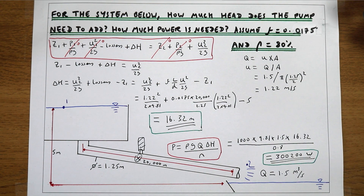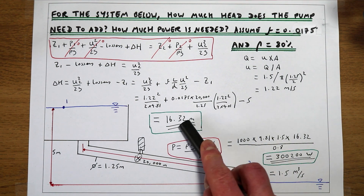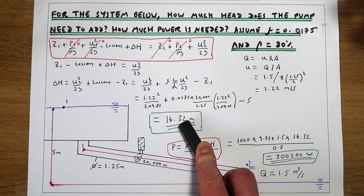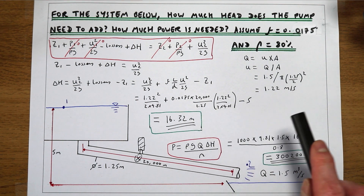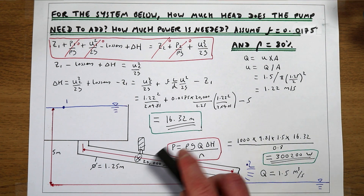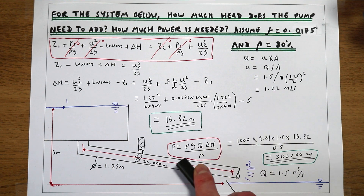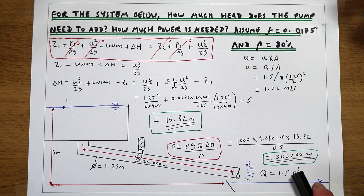So if you were designing a pump system and needed to know what level of pump was required to keep this system working, what we've done in this example is work out how much head the pump needs to give at a certain flow rate, and then used the pumping equation to work out how much power we need to provide that pump in order for it to fulfil the design brief.